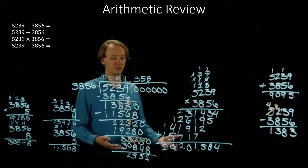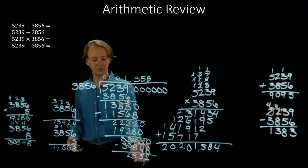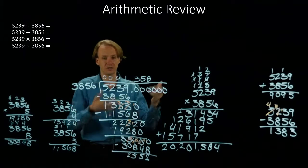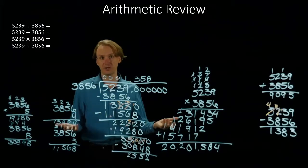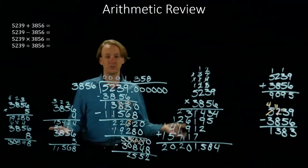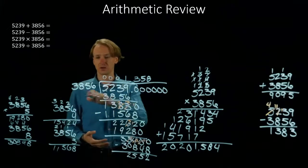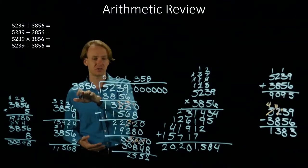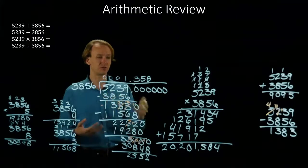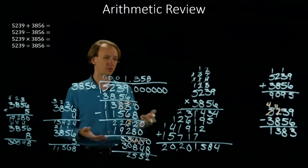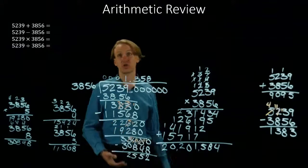So I can continue doing this until either I have 0 left over, in which case any more division would be pointless, or until I get bored. At this point I'm pretty much bored. We can say that 3856 goes into 5239 about 1.358 times, and some more change.